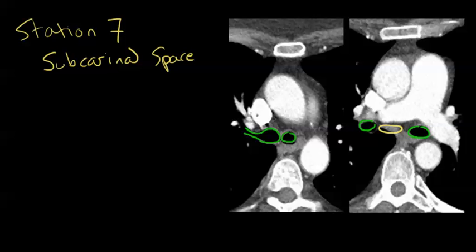Over here is the esophagus. And then you've got your pulmonary artery right here — this is the main PA, here is the left PA, and here is the right PA. You can see how the right PA is directly in front of the subcarinal lymph nodes. Over here you've got the superior vena cava.